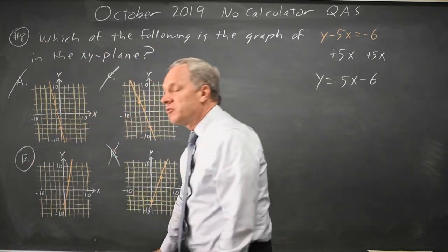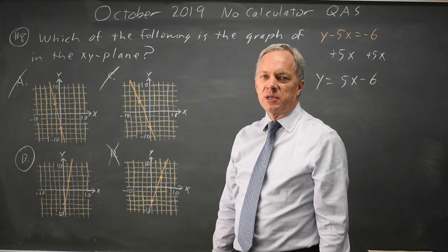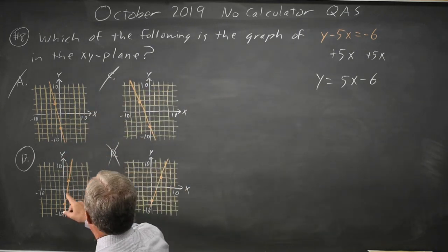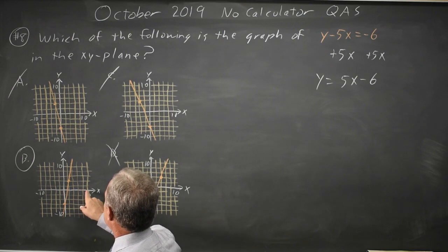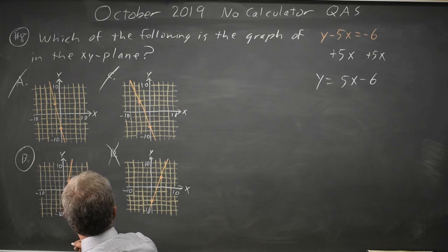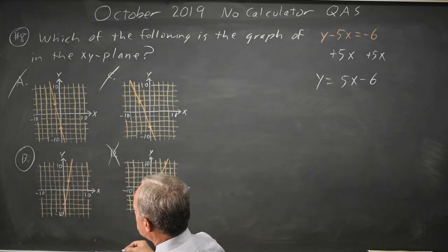Let's read the scales carefully. College Board will often mess with the scales on your axes and make them unequal. 1, 2, 3, 4, 5 squares equals 10 horizontally. 1, 2, 3, 4, 5 squares equals 10 vertically. So the scales are proportionate.